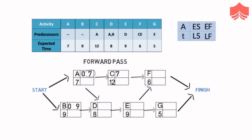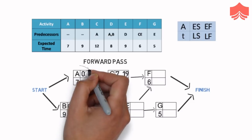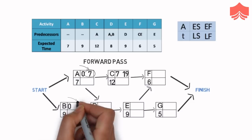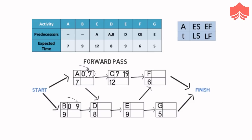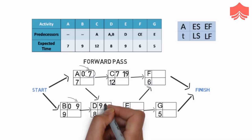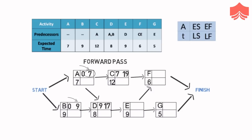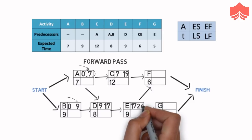After these 7 days, C will take 12 days to complete, and therefore the earliest finish time of C will be 12 plus 7 equals 19. D needs both A and B to finish first. A has the earliest finish time of 7 days and B has 9 days, so we can say that on day 9 both these activities will be finished. Therefore, earliest start time for D will be 9, and D will finish in 8 plus 9 equals 17 days. E has only D as its predecessor, so it can start as soon as D ends. After going on for 9 days, it will end on the 26th day of the project.